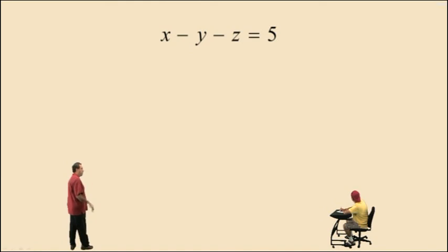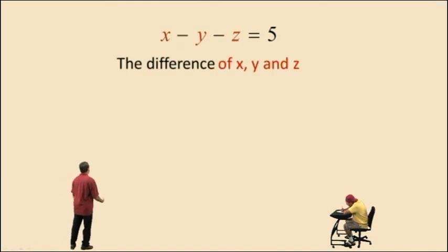Here we have the difference of 3 things. We have the difference of x, y, and z is 5. There's the word statement for that equation.